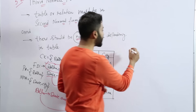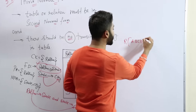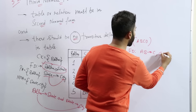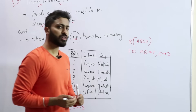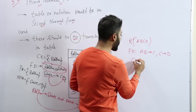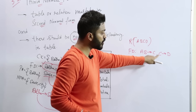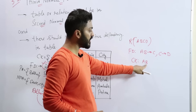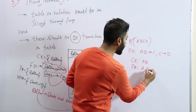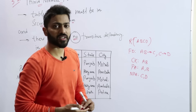Now let's see with a normal example. If I have a relation A, B, C, D with four attributes, and FDs given are: AB → C and C → D. What will be the candidate key? If we take the closure of A, B, it will determine C, and through C we can determine D. So A, B is the candidate key. Therefore, prime attributes are A and B, and non-prime attributes are C and D.